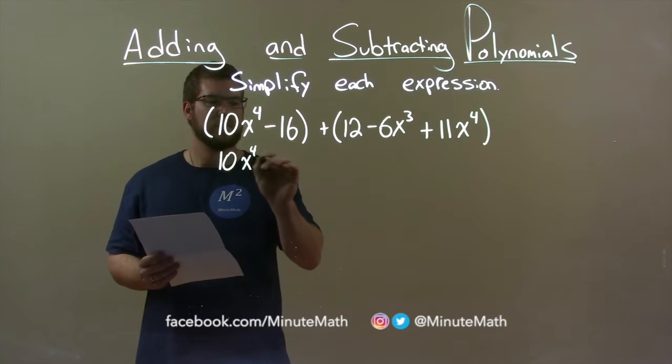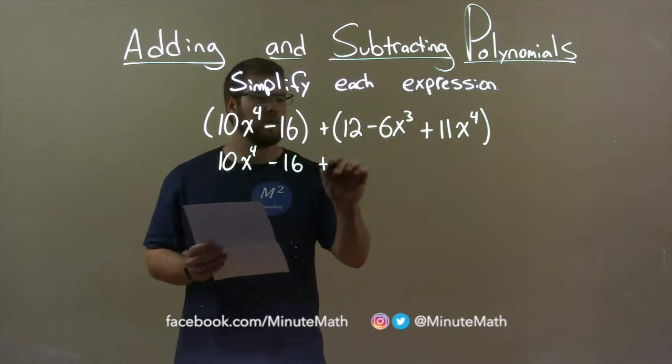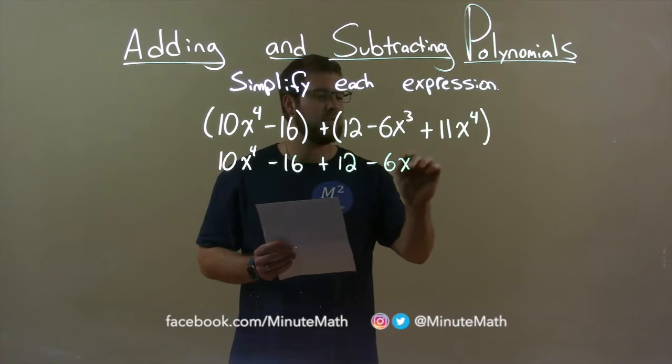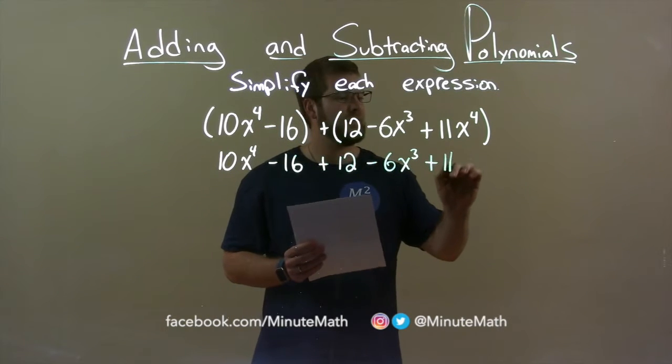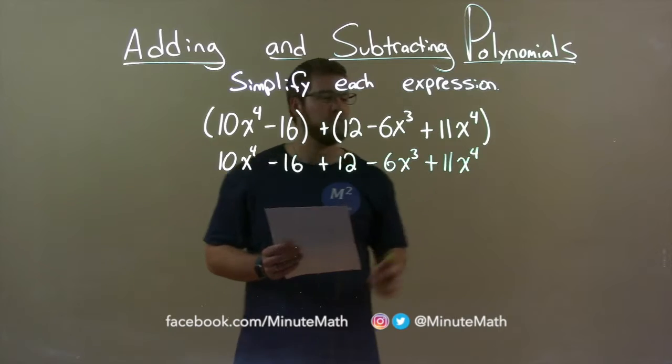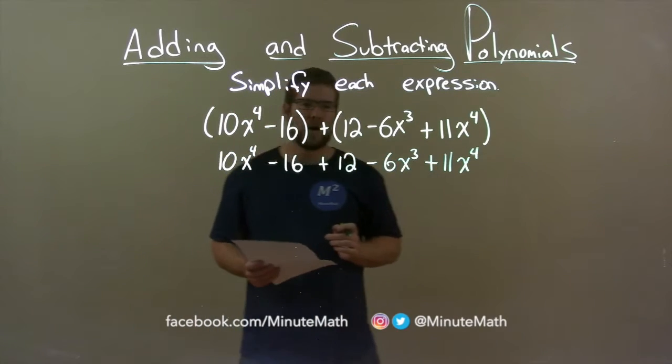10x to the 4th minus 16 plus a 12 minus 6x to the 3rd plus 11x to the 4th. I want to combine my like terms.